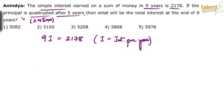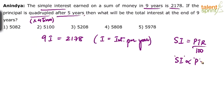He is asking us to find the interest if the principal is quadrupled after 5 years. The formula for simple interest is SI = PTR/100. The interest SI is proportional to the principal amount. As the principal increases, simple interest also increases, and it is directly proportional. So if the principal is doubled, simple interest gets doubled. If the principal is halved, simple interest also gets halved. If the principal is quadrupled, then the interest also gets quadrupled.